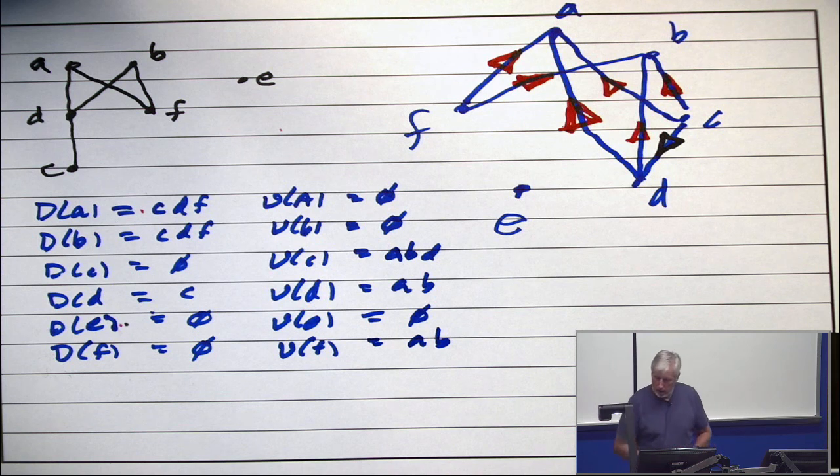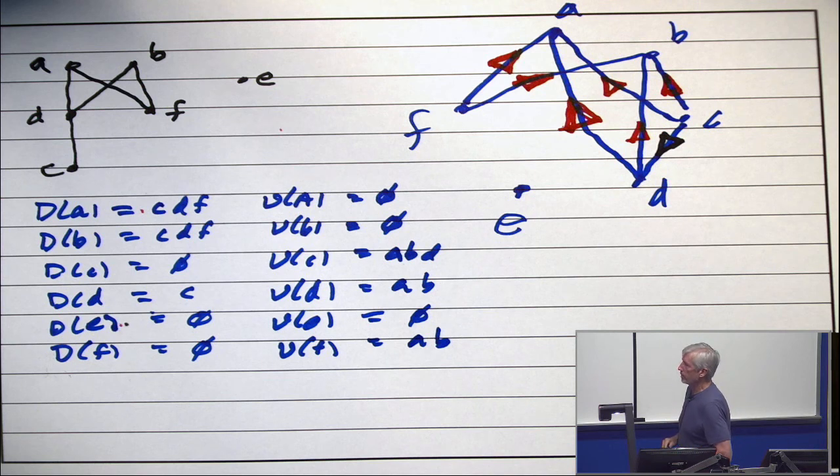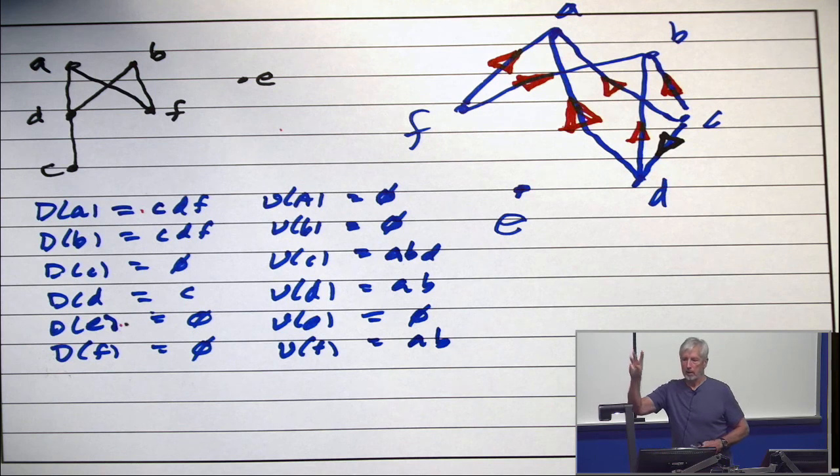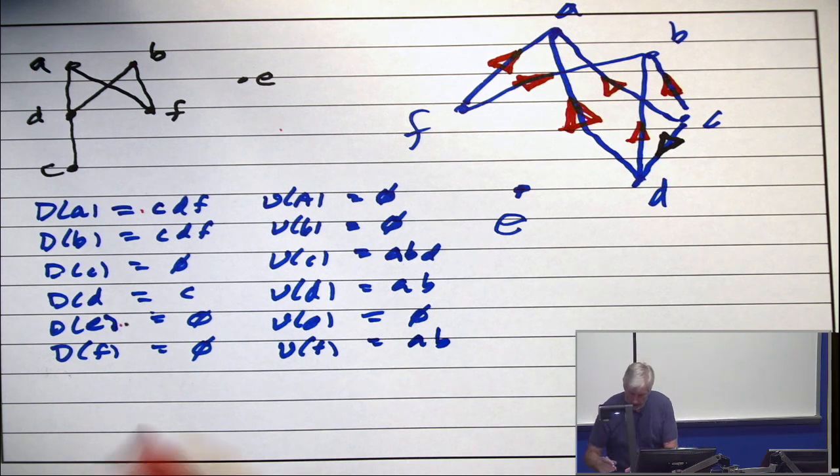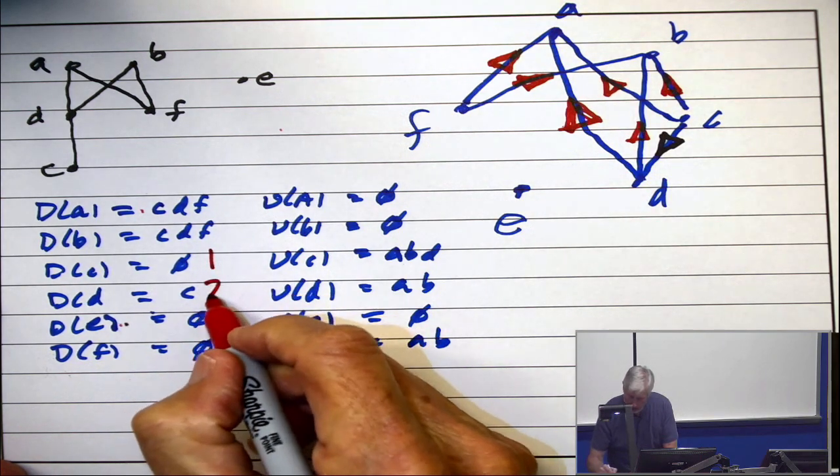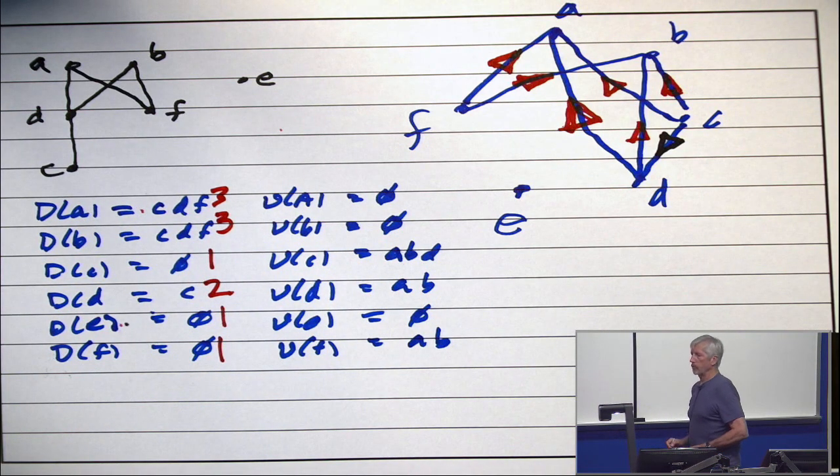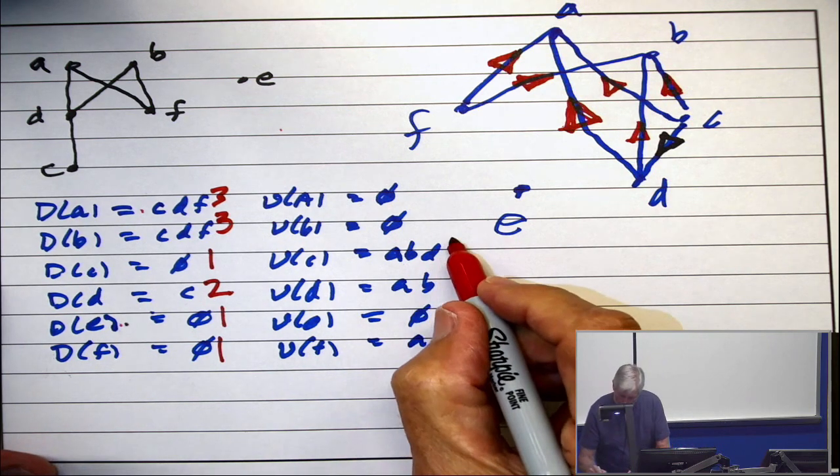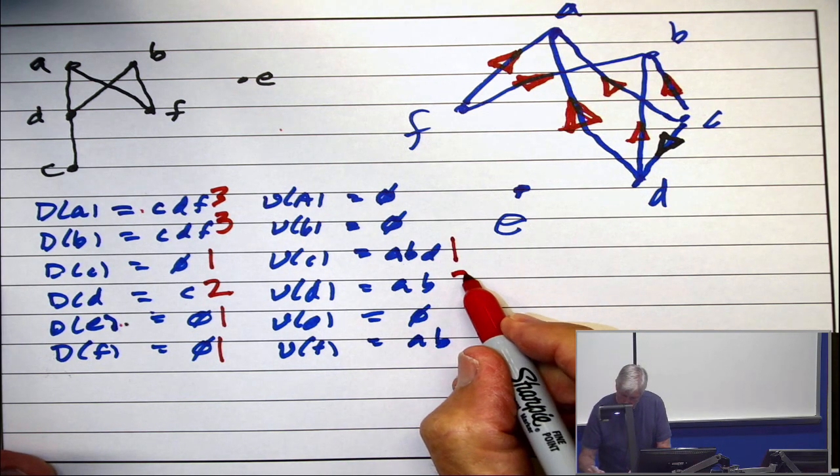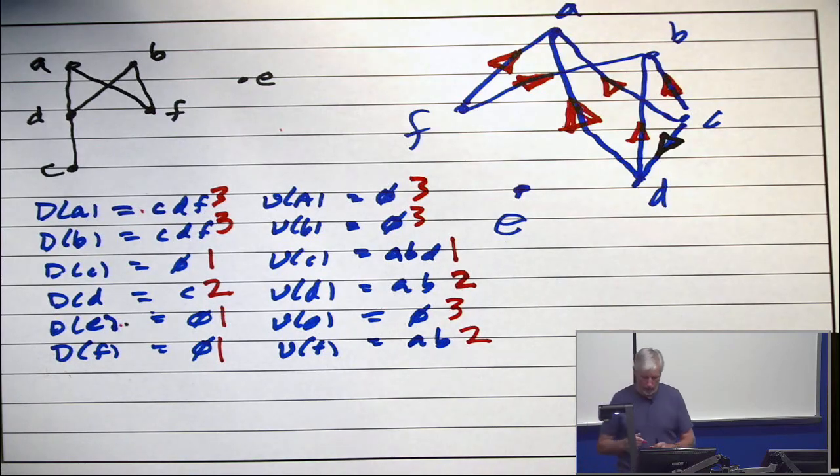All right. How many different downsets are there? How many different downsets? I see empty, singleton C, and the triple CDF. There's only three. So, label them from little to big. One, one, one, one, two, three, three. Label the upsets backwards from big to little. One, two, two, three, three, three, three. And now, there's your intervals.